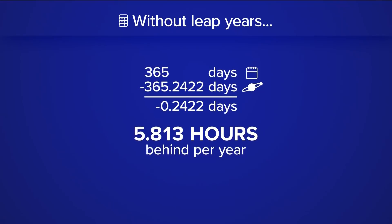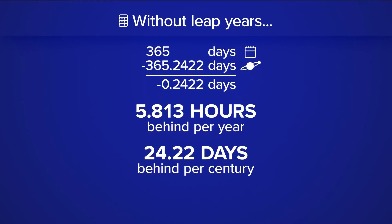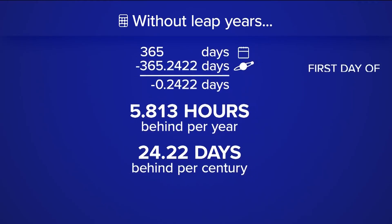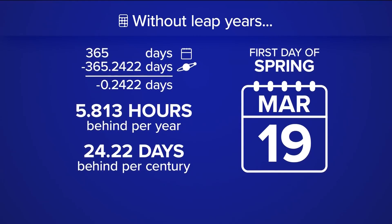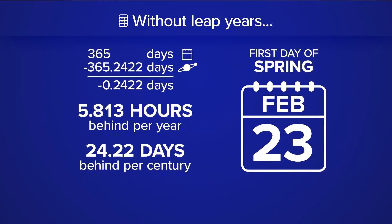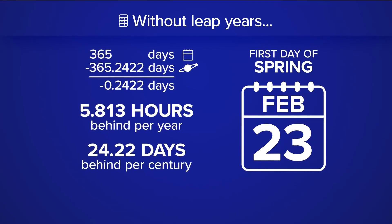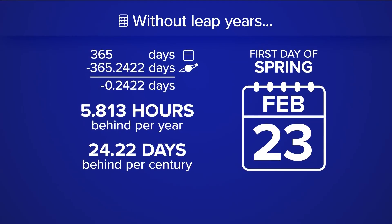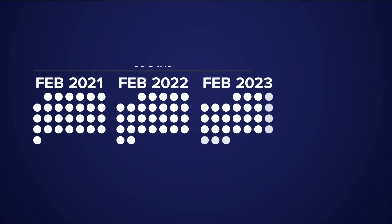In about 100 years, our calendars would be off 24 days. So for example, instead of the first day of spring being around March 19th, without leap year it would be on February 23rd, and so on and so forth. To help synchronize the time, the solution was introduced centuries ago.